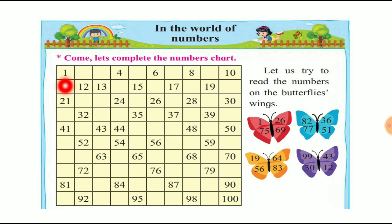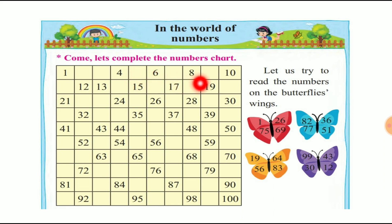You will read the numbers as we go. 1, 2, 3, 4, 5, 6, 7, 8, 9, 10. Okay, this is 1 to 10 in serial order.